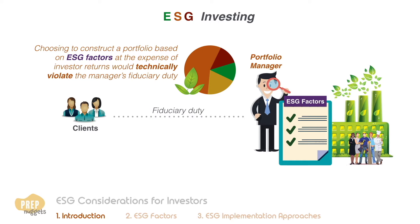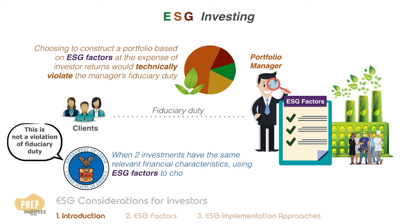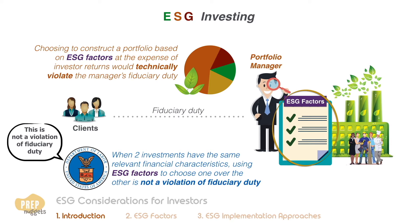Choosing to construct a portfolio based on ESG factors at the expense of investor returns would technically violate the manager's fiduciary duty. However, the US Department of Labor has recently addressed this potential conflict, stating that this is not a violation — specifically, when two investments have the same relevant financial characteristics, using ESG factors to choose one over the other is not a violation of fiduciary duty.